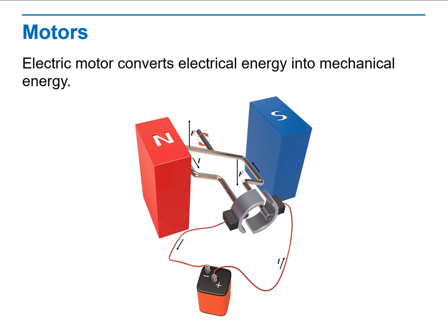Then we'll discuss motors. Motors and devices like motors work on the same principle as generators, but in reverse. How motors work compares to the DC generator: the battery provides the current to get the coil to spin, rather than the magnets inducing a current in the wire.